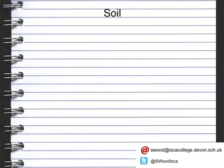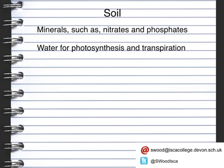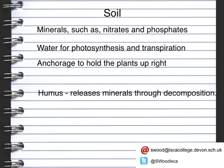Plants obviously grow in soil and they need a variety of things within it. Firstly they need minerals such as nitrates and phosphates to help them with growth and various other processes. They also need water for photosynthesis and transpiration. They also need the soil for anchorage to hold the plants upright. The humus releases minerals through decomposition, and this is essential in order to provide a fertile soil.